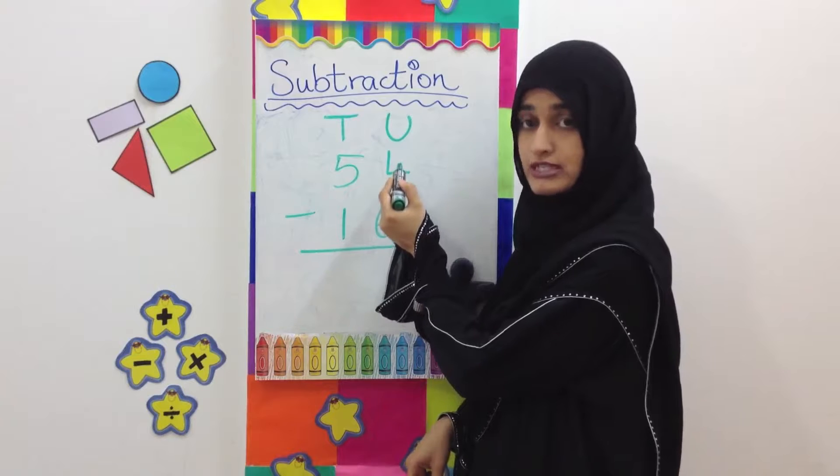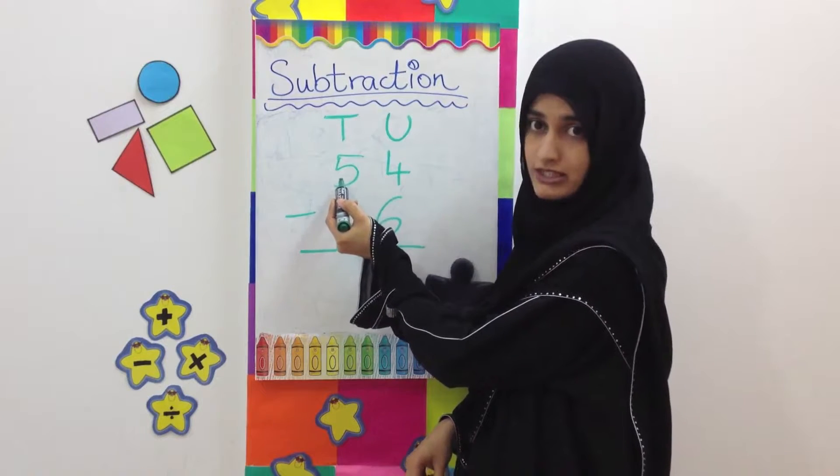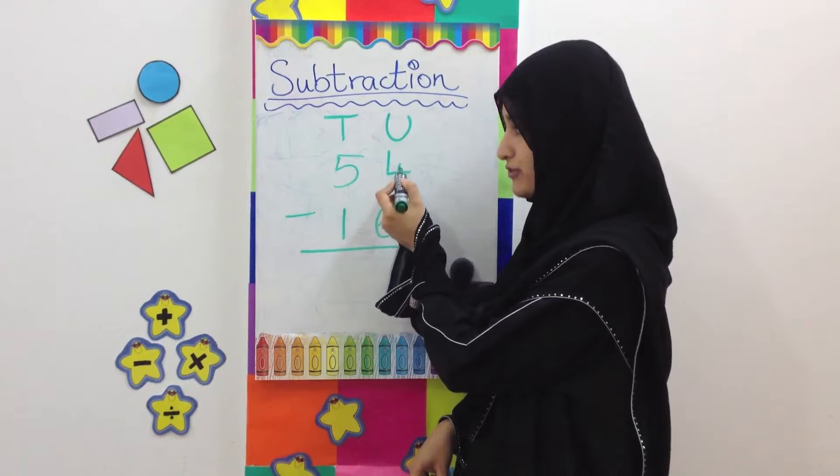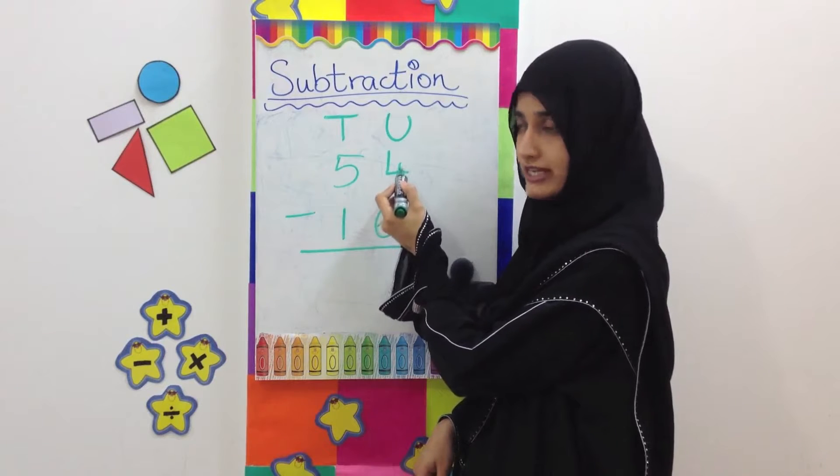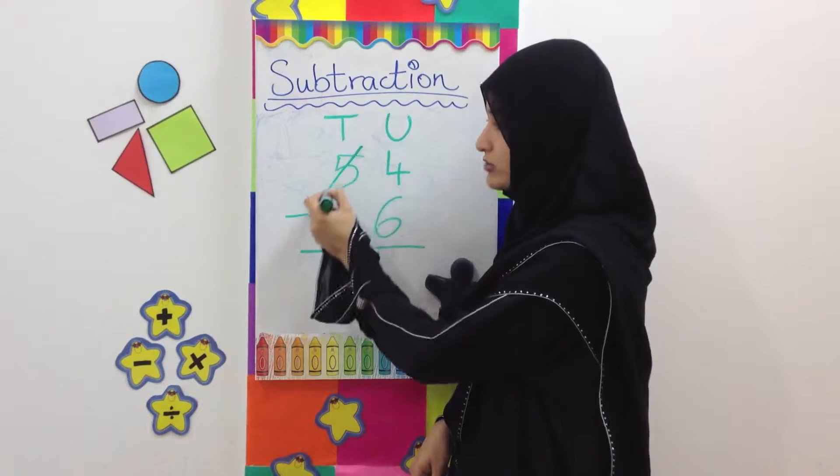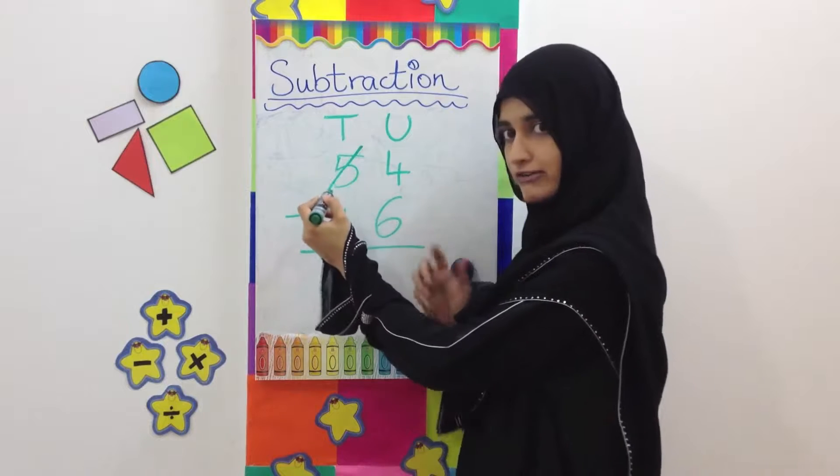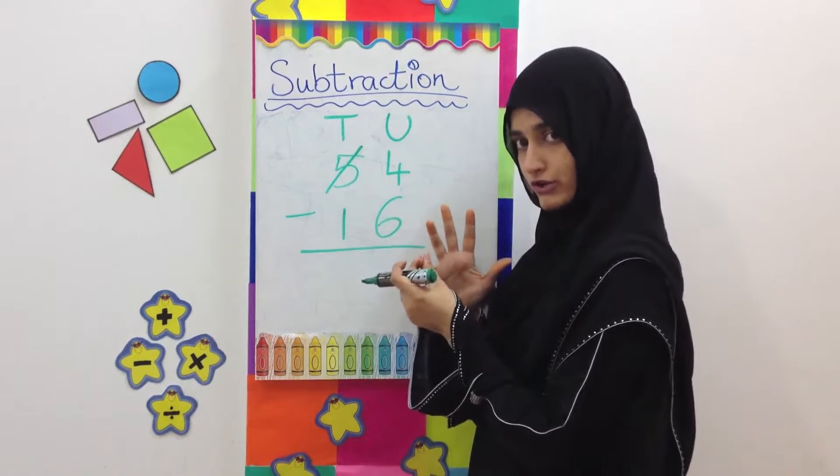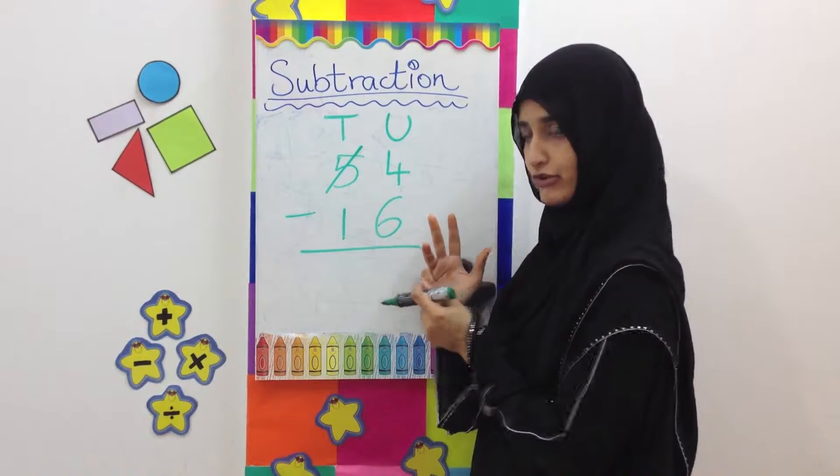That's why what we need to do is we need to borrow. The number in the unit space is going to borrow a 10 from the number which is in the 10s space. So this 4 here is going to borrow a 10 from the 5 next to it. So this 10, we have 5 tens, 1 we are going to borrow. So we have 4 now.